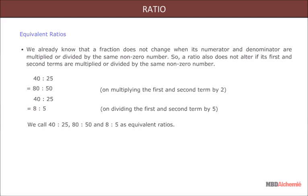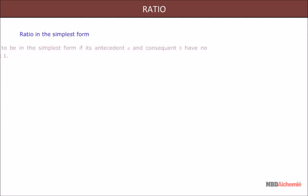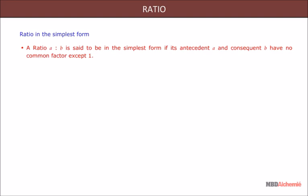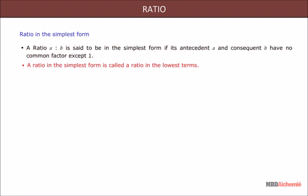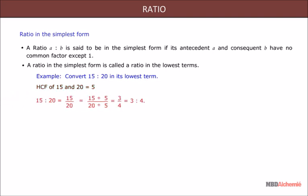Ratio in the simplest form: a ratio a:b is said to be in the simplest form if its antecedent a and consequent b have no common factor except one. A ratio in the simplest form is called the ratio in the lowest terms. For example, to convert 15:20 to its lowest terms, the HCF of 15 and 20 is 5, so 15:20 equals 15/20 divided by 5/5, that is 3:4.